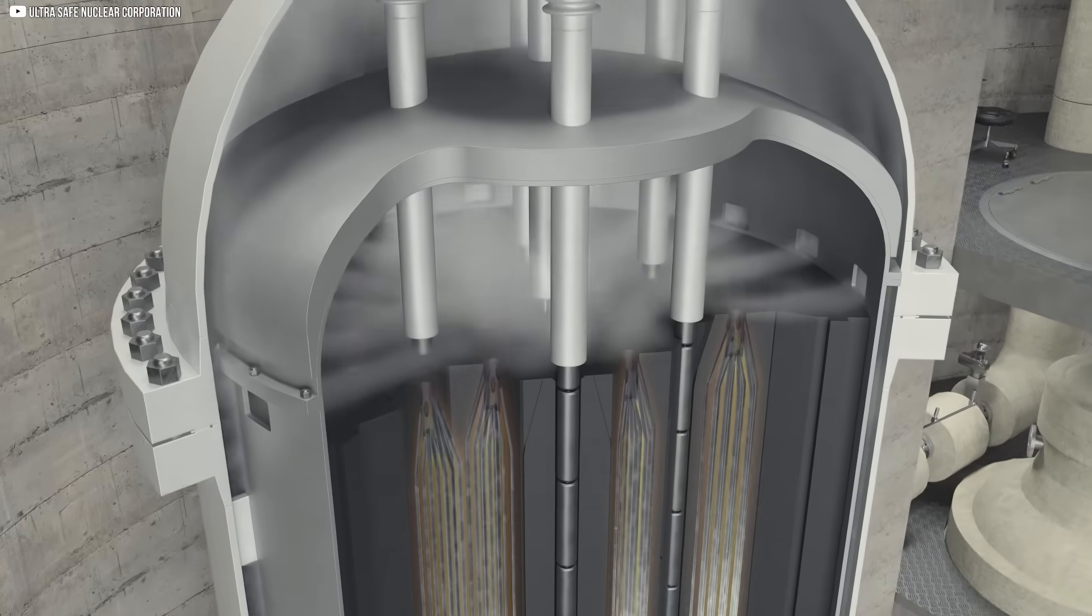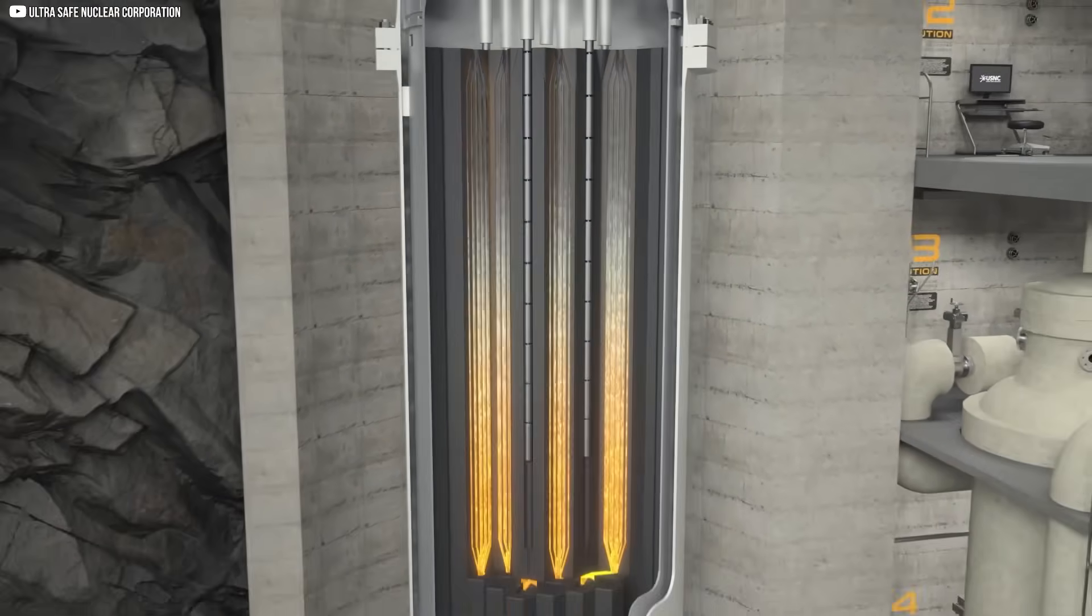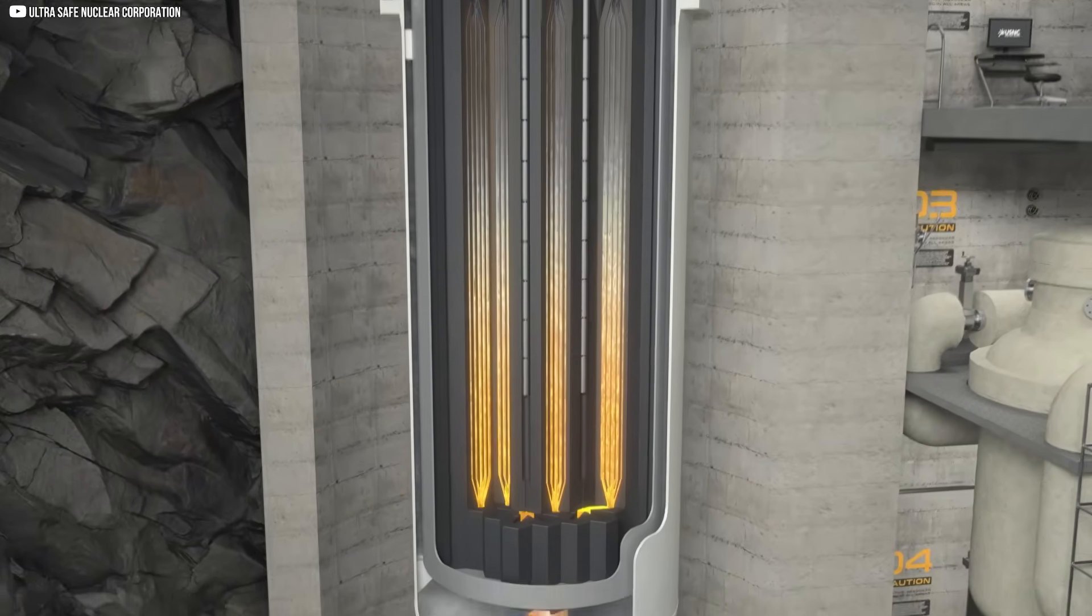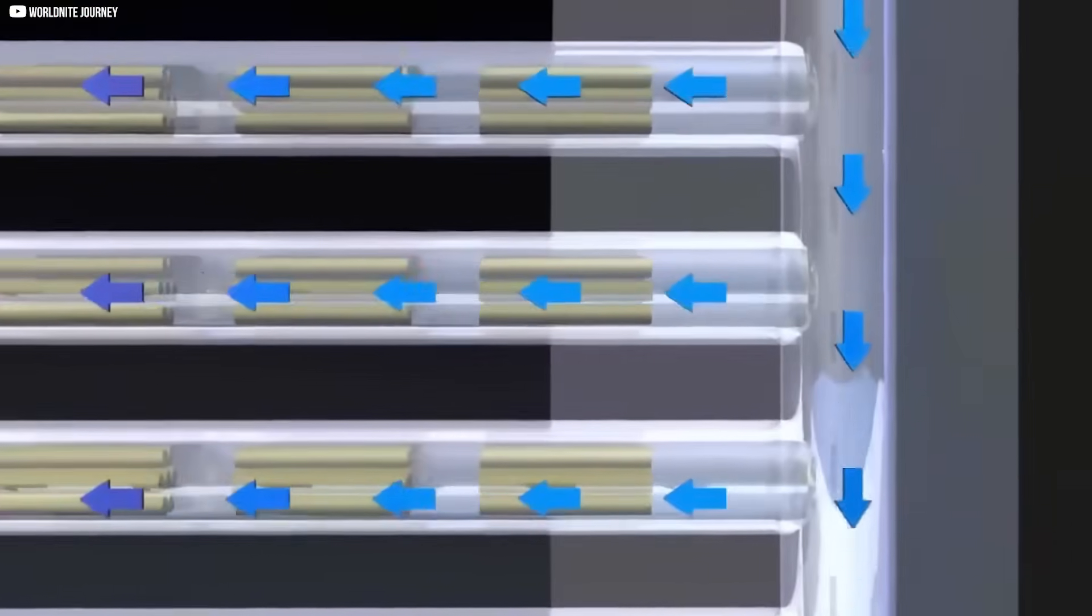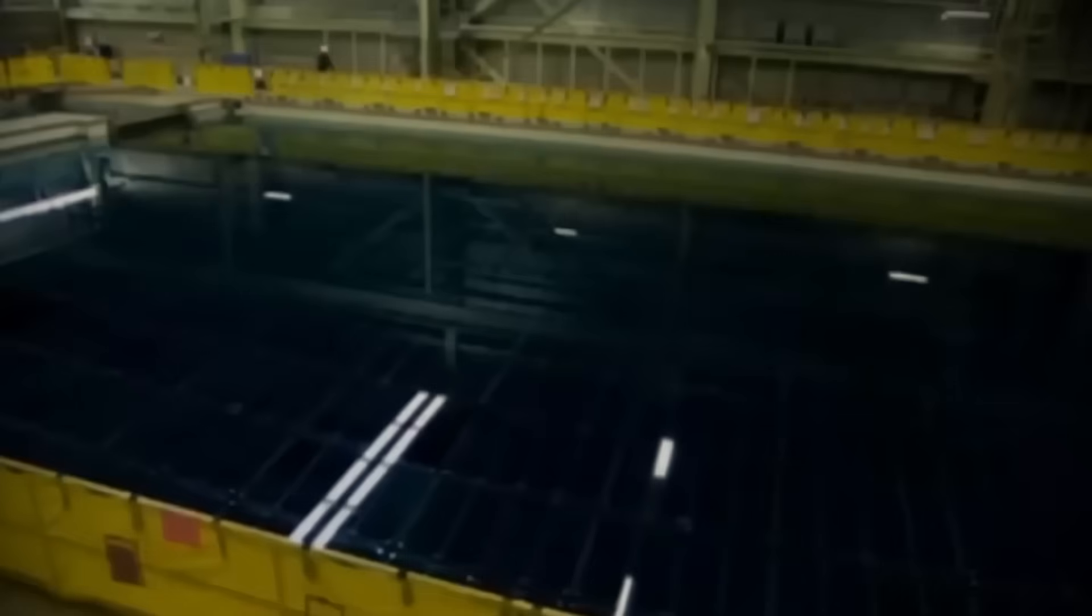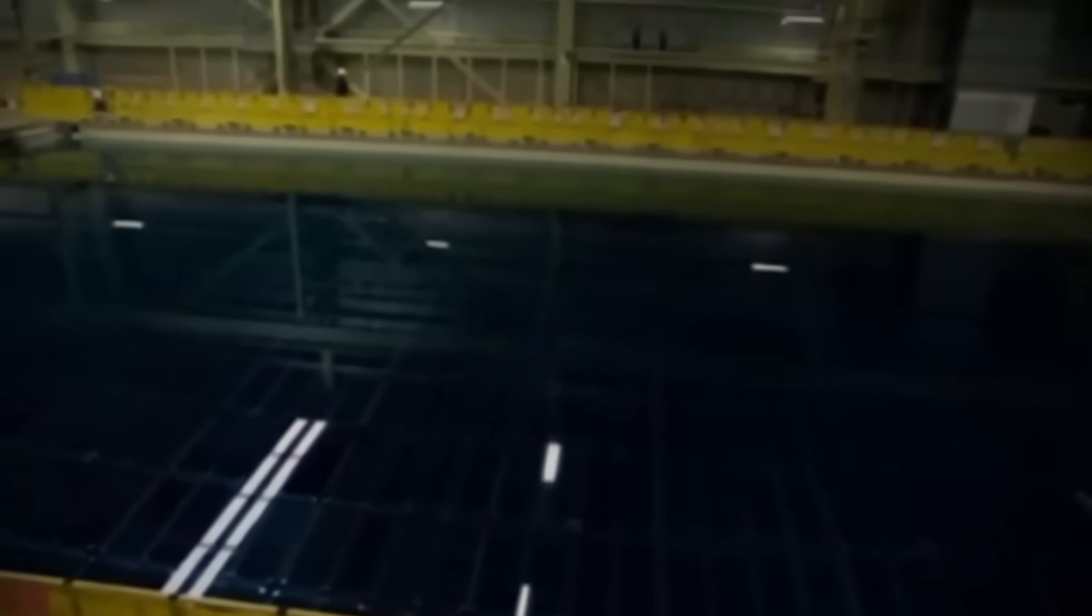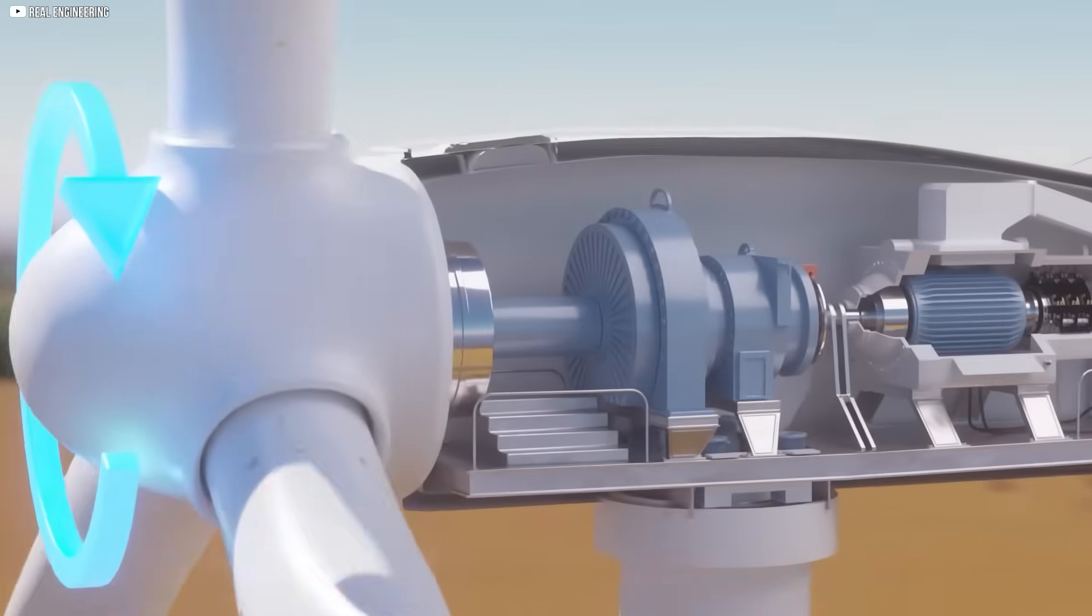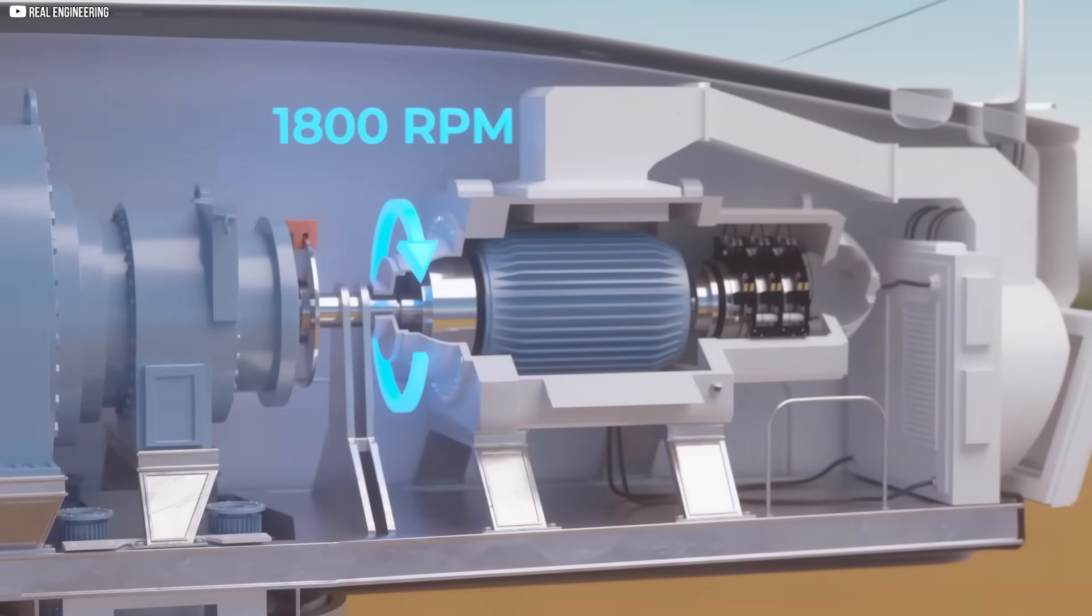To maintain control over this powerful process, control rods made of materials like boron or cadmium are inserted into the core. These rods absorb excess neutrons, slowing or halting the chain reaction when necessary. The heat generated by fission is used to boil water, creating steam that drives turbines connected to a generator, ultimately producing electricity.